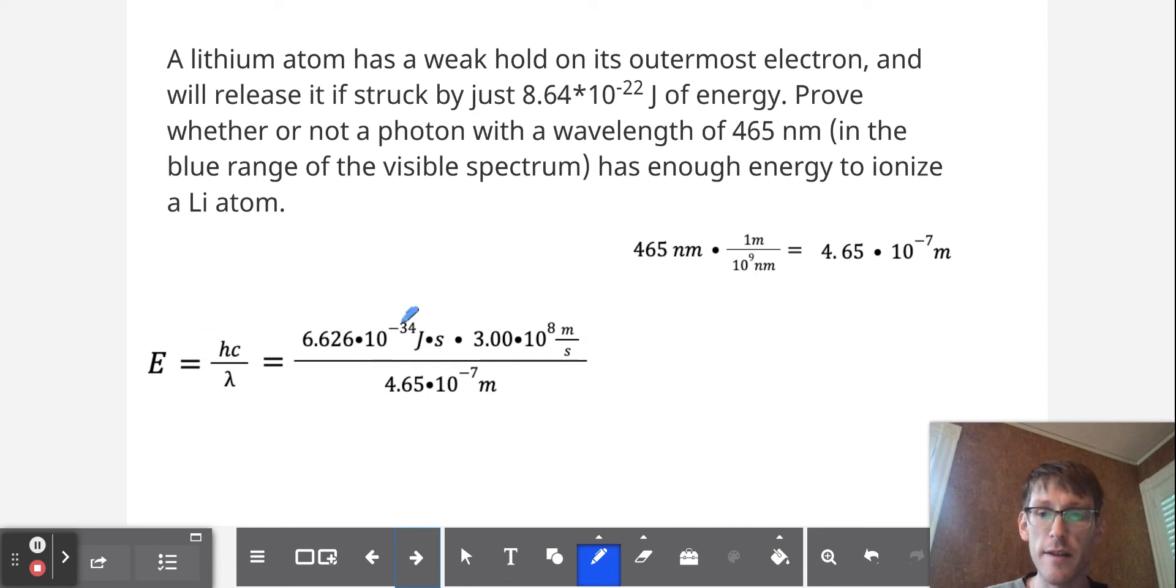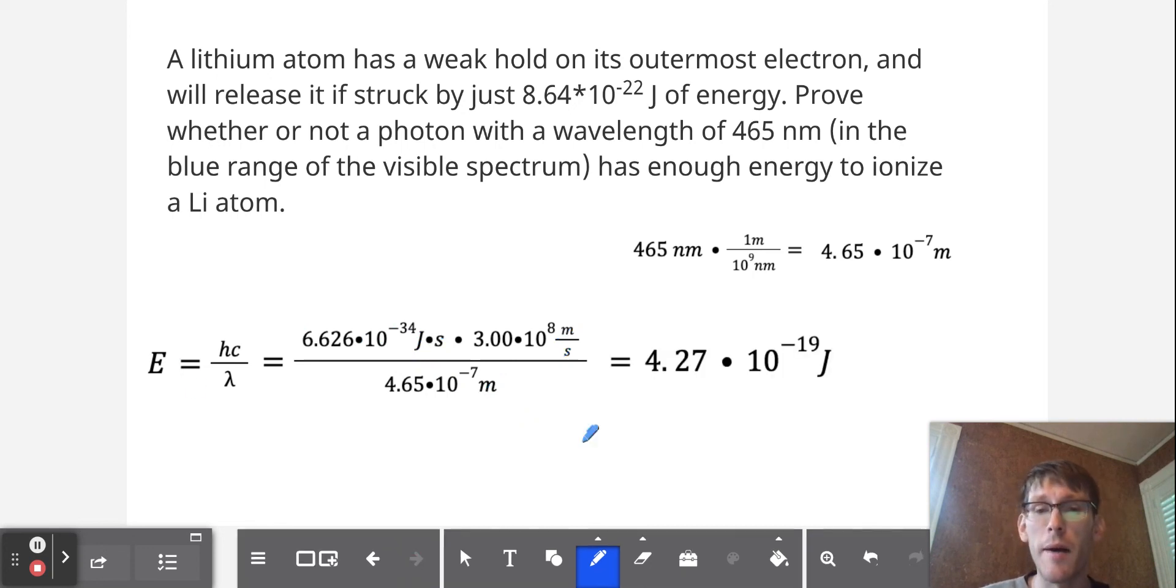h, this Planck's constant, we're going to see that the seconds and the inverse seconds from the speed of light cancel out. We'll also see that the meters in the speed of light and the meters in the wavelength cancel out, and that leaves us with joules on the right side, which is a measurement of energy, which is what we want. And what we find is that the energy of the photon with a wavelength of 465 nanometers is equal to 4.27 times 10 to the negative 19th joules.